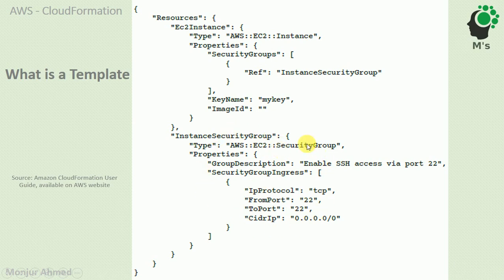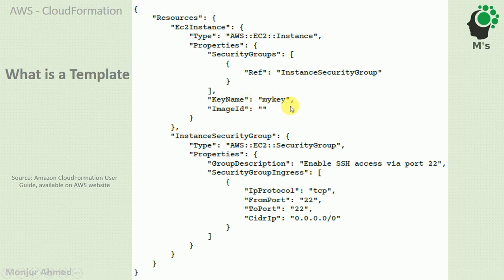The reason we can write it this way is that if you have a very large template file with 500 lines of code, you might need to use the same security group in many different places. So you define it once and simply refer to it wherever you want to use it. You also provide a key name and other properties. This is a more elaborated version of a template file, and the new concept introduced here is the 'Ref' reference.